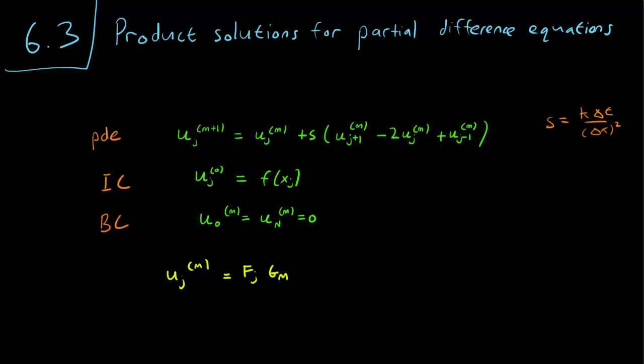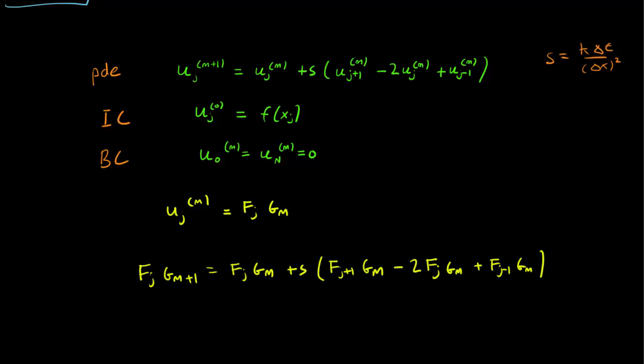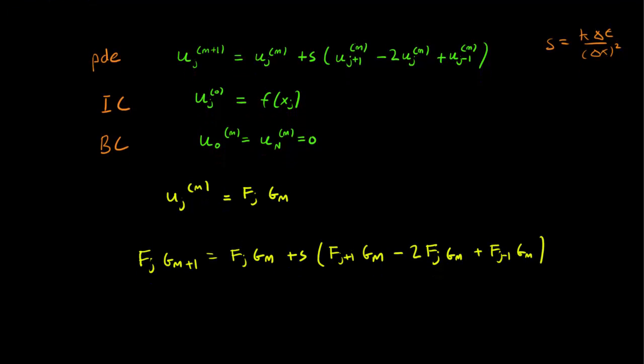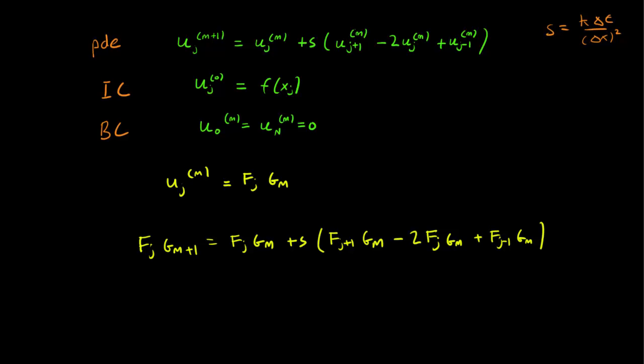And like we do in the continuous case, we simply plug this into the PDE and this is what we get. This is our equation involving f and g. Let's also talk about our boundary conditions. So we have f_0 times g_m is 0, and f_n times g_m is 0.